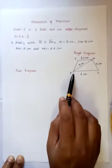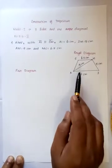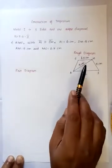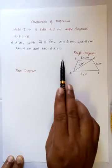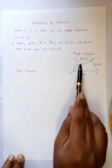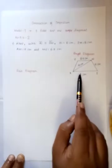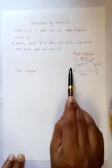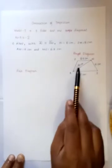You can draw the rough diagram first. In a trapezium, one pair of opposite sides are parallel, and the other sides are not parallel.